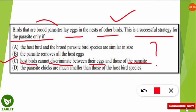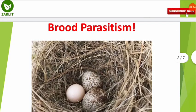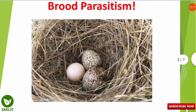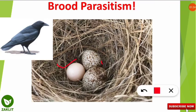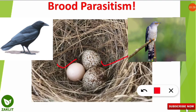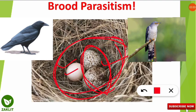This successful strategy is called successful only if the host bird is not able to discriminate between its own eggs and those of the parasite. Let me explain with an example. Assume two eggs — one from a crow and one from a cuckoo bird. Brood parasitism is best illustrated by the crow and cuckoo bird. The cuckoo lays its egg in the nest of the crow, and the crow misinterprets the cuckoo's egg as its own.